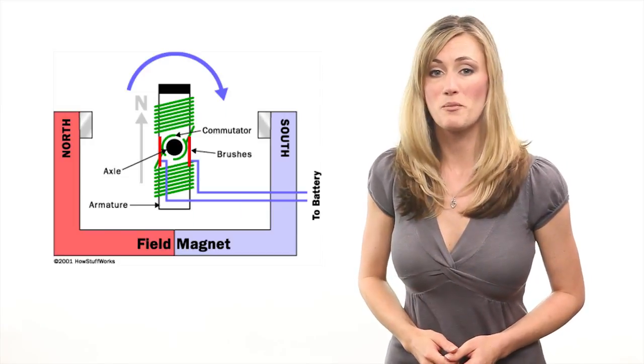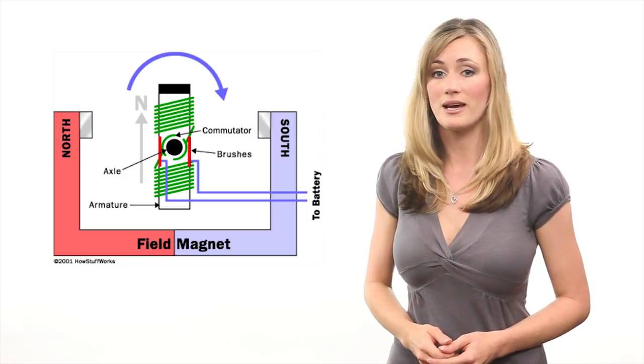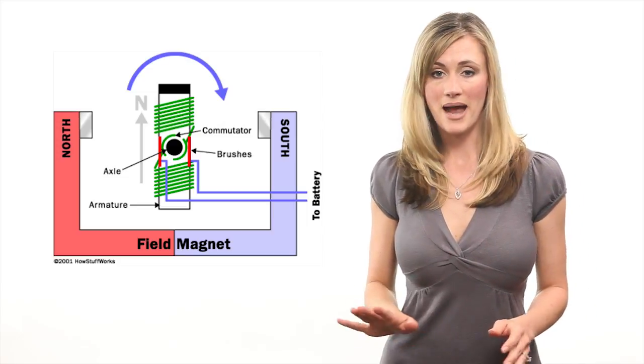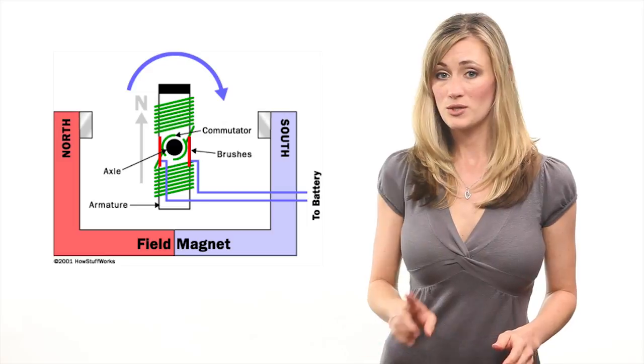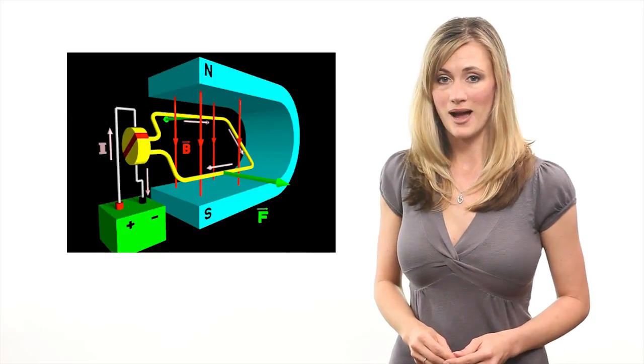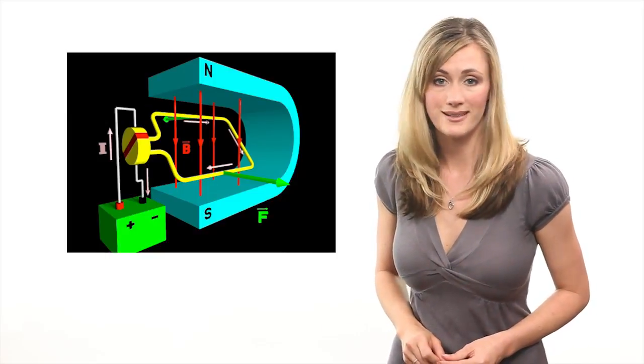The basic principle of electromagnetism states that when you run an electric current through a wire, a magnetic field is generated. So when you run electricity through a wire, the wire itself becomes an electromagnet.